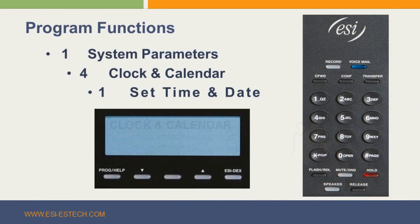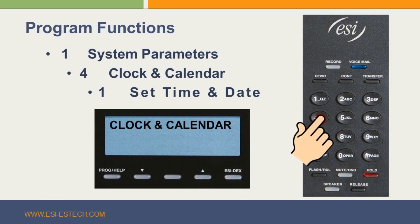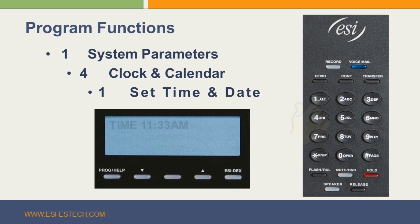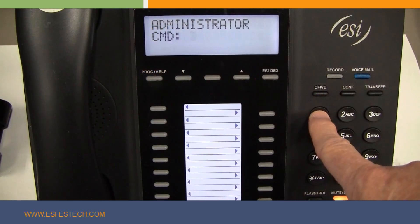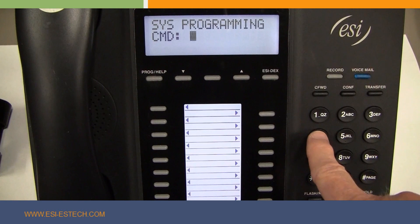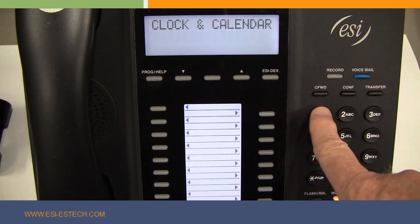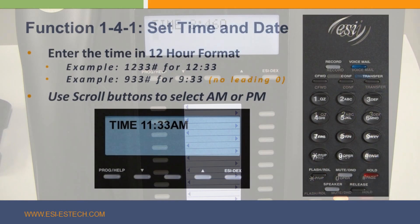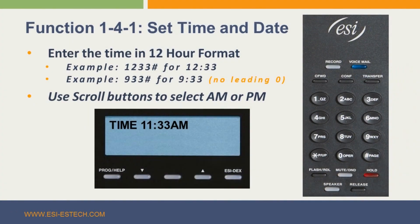To set the time and date, you will access function 141 by pressing 1, then 4, then 1 on your phone. You need to enter the new time using a 12-hour format and then press pound.